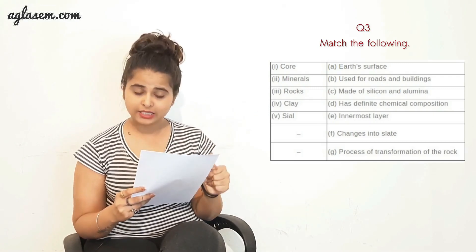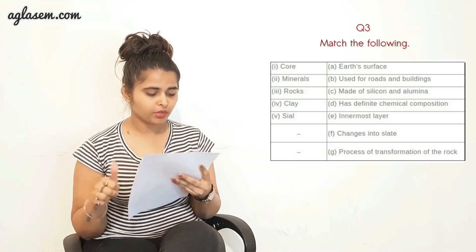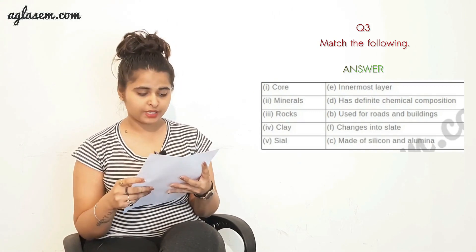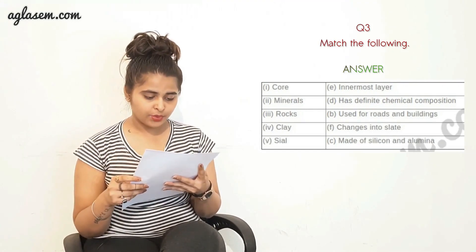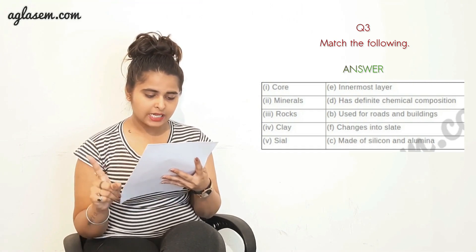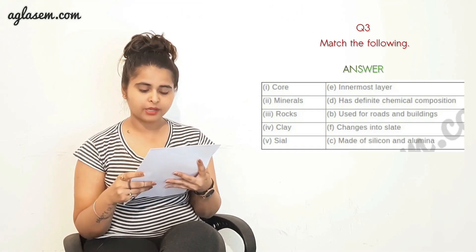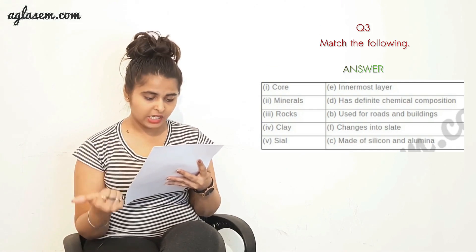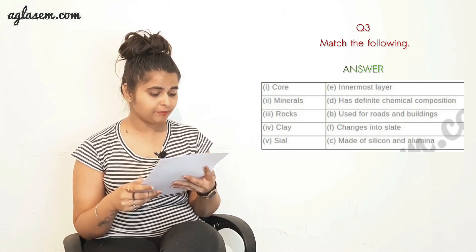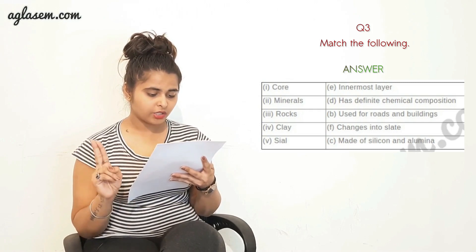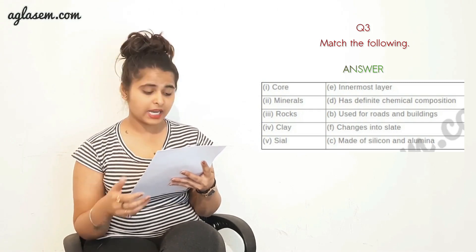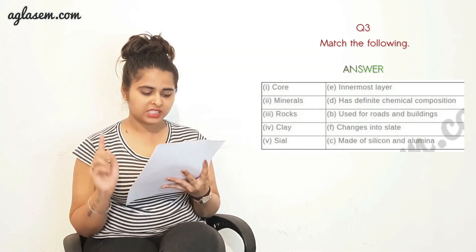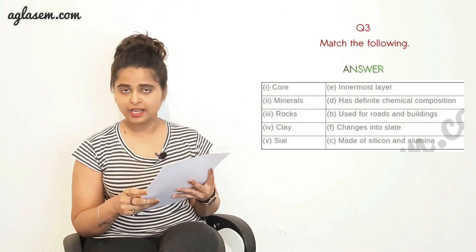The third question is Match the Following. You can see the rest of the question on screen. The answers are: core connects to (e) innermost layer; mineral connects to (d) has defined chemical compound; rock connects to (b) used for roads and buildings; clay connects to (f) changed into slate; and soil connects to (c) made up of silicon and aluminium.